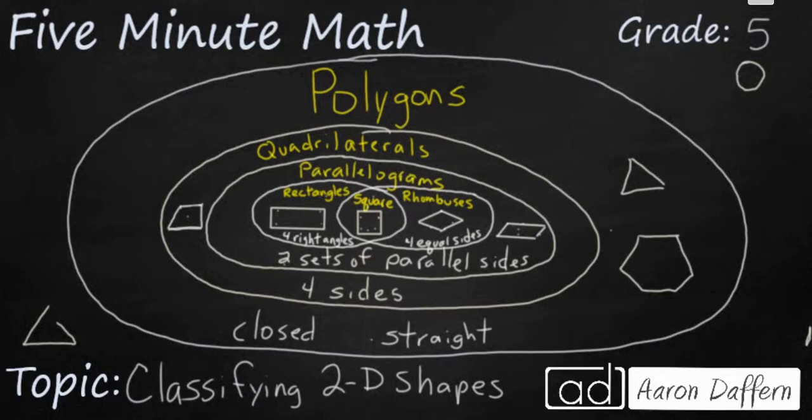As each of these shapes are within smaller areas they not only maintain the attributes of the small area that they're in but also any of the larger areas that they are nested within. So let's take a look at for example a square.